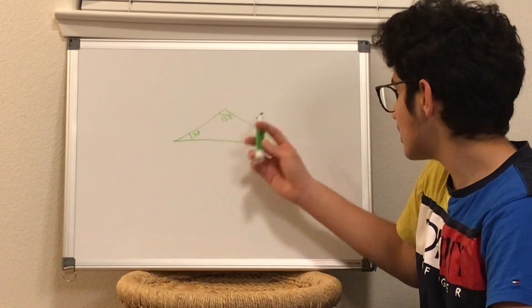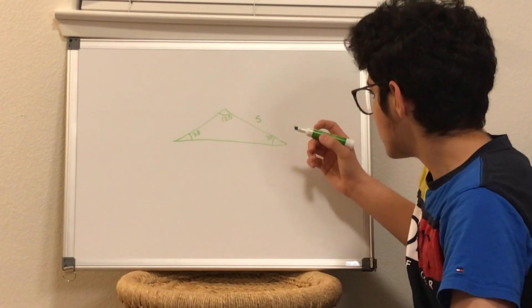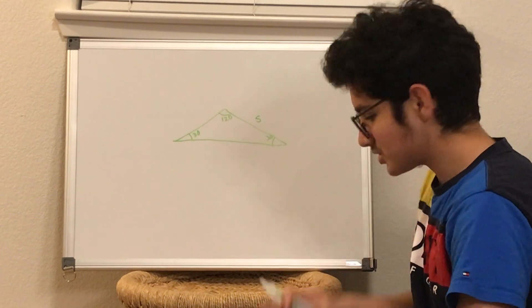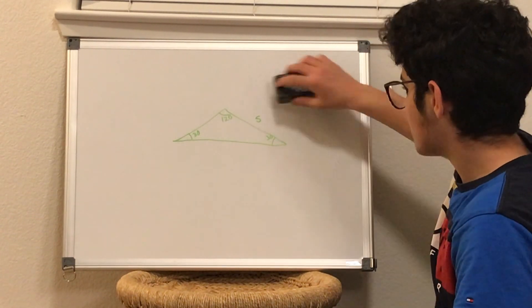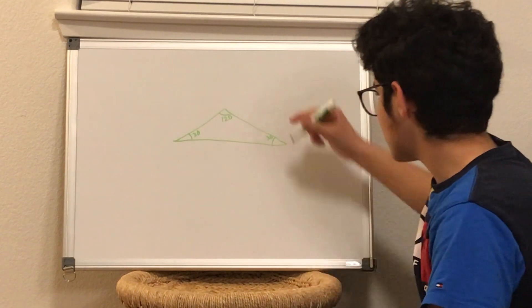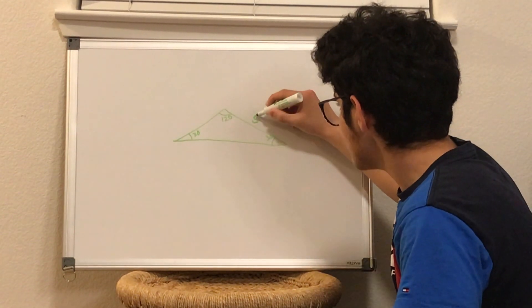It might seem difficult because you're only given one of the side lengths. And in case this is confusing, I'll just rewrite it because it looks a bit like a 5. I'll just call that S.